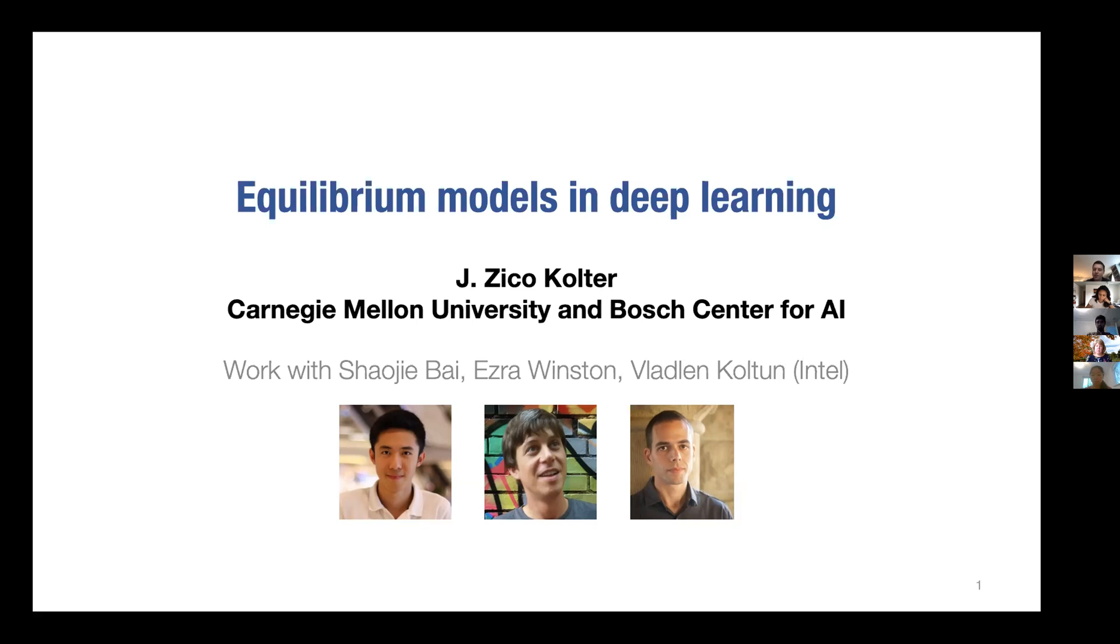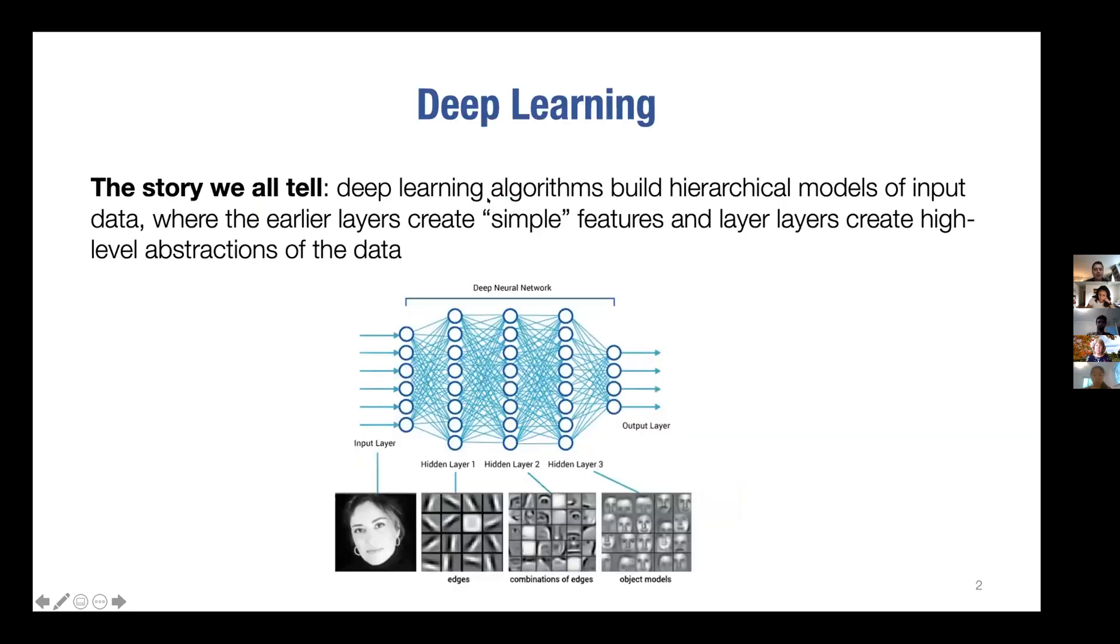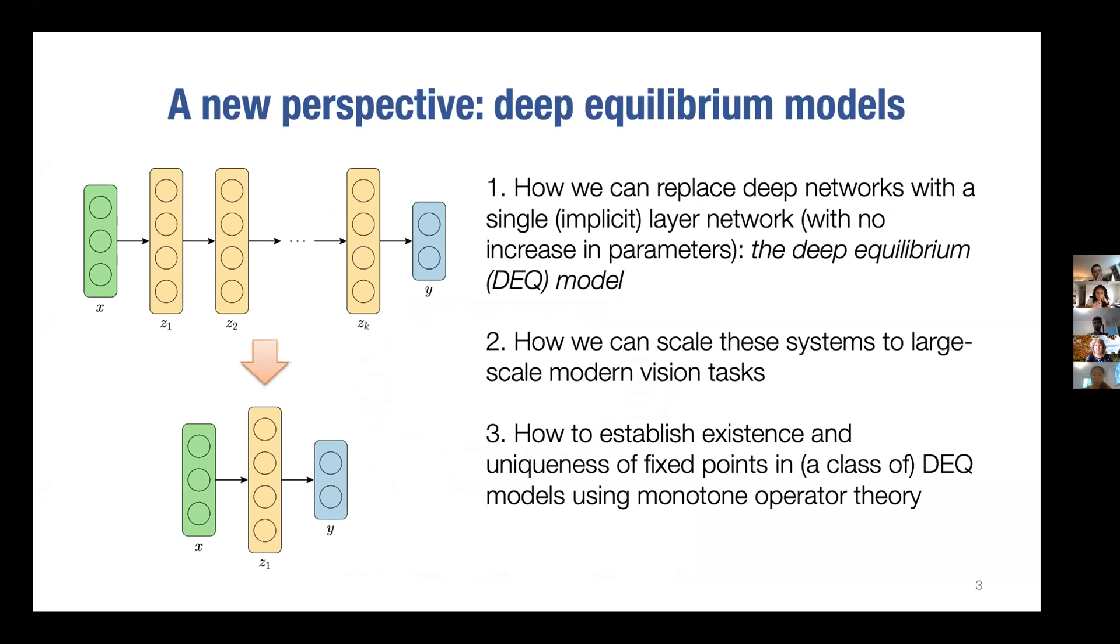The story we all tell about deep learning is that these state-of-the-art machine learning algorithms have some kind of hierarchical processing of the data - first layers extract edges, then parts, then whole objects, etc. I want to make the point that we can think about deep learning in a very different way, and it brings out a different class of algorithms that I think we're just starting to understand and which have a lot of potential value and power.